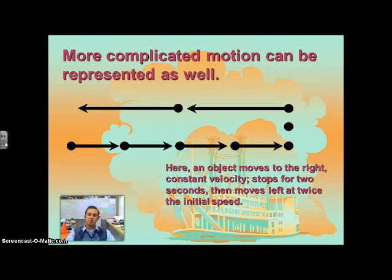We can also draw motion maps for more complicated motion. For example, in this motion map, we have an object that starts out moving to the right for four seconds, it stops for two seconds, and then it turns around and heads left, going twice as fast as it was before.